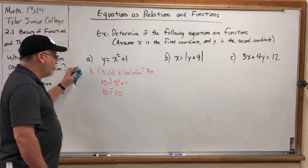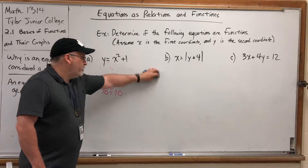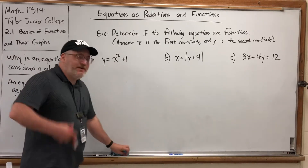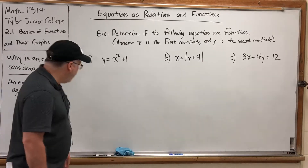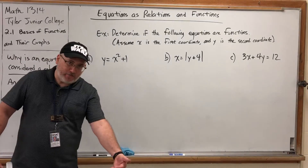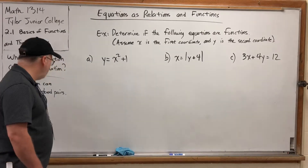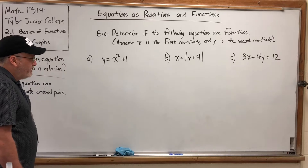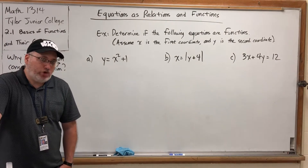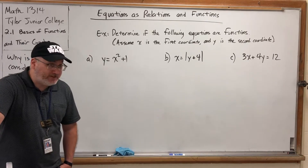How many solutions could we generate? In short, an infinite number of them. So you can think of an equation as an implied relation — implying a set of ordered pairs instead of explicitly listing them all. Every equation in x and y is a relation, because if an ordered pair makes the equation true, it belongs to the relation; otherwise it does not.